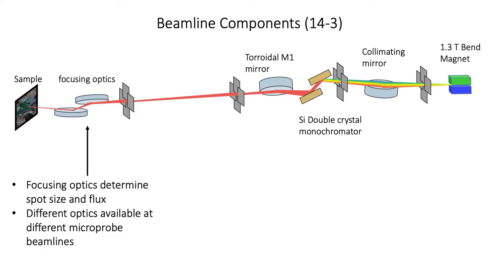Let's take a look at the different beamline components — this example is from beamline 14-3, though it's illustrative of all our micro imaging beamlines. At 14-3, x-rays emanate from a bend magnet, then go to a collimating mirror and from there to a silicon double crystal monochromator. All of our beamlines at SSRL offer a 111 double crystal monochromator; however, beamline 6-2 additionally has a 311 monochromator option which provides higher energy resolution. The beam then goes to a toroidal focusing mirror, into the hutch through aperturing slits, and finally to the focusing optics and onto the sample.